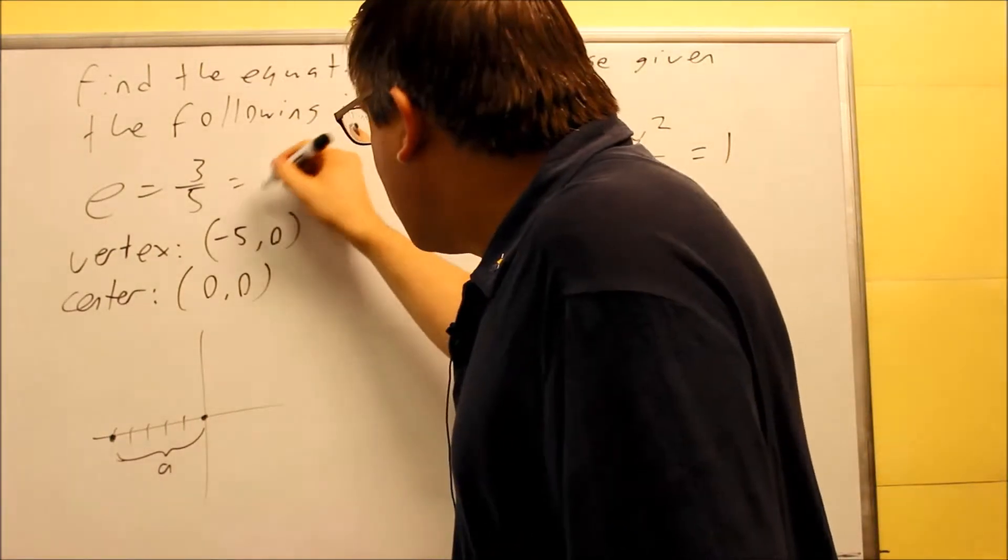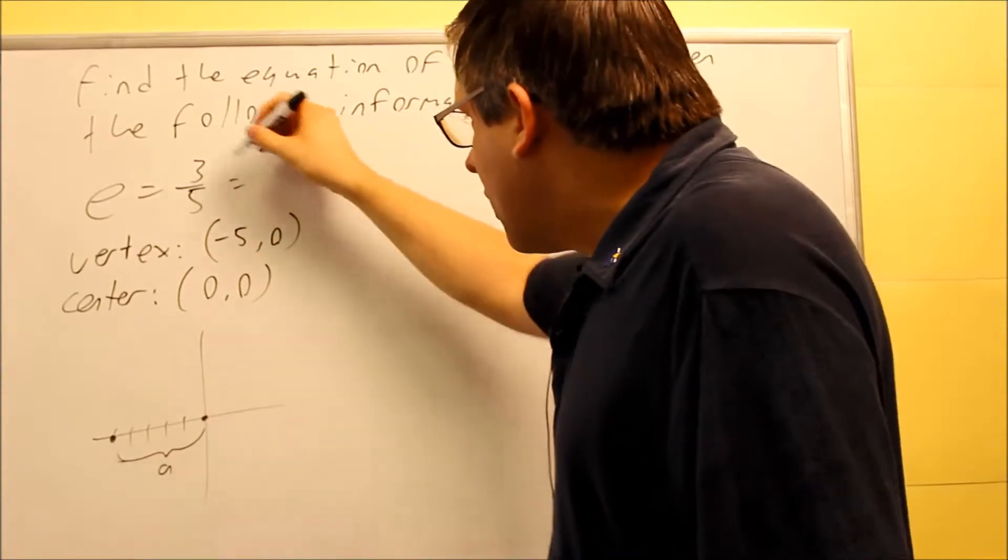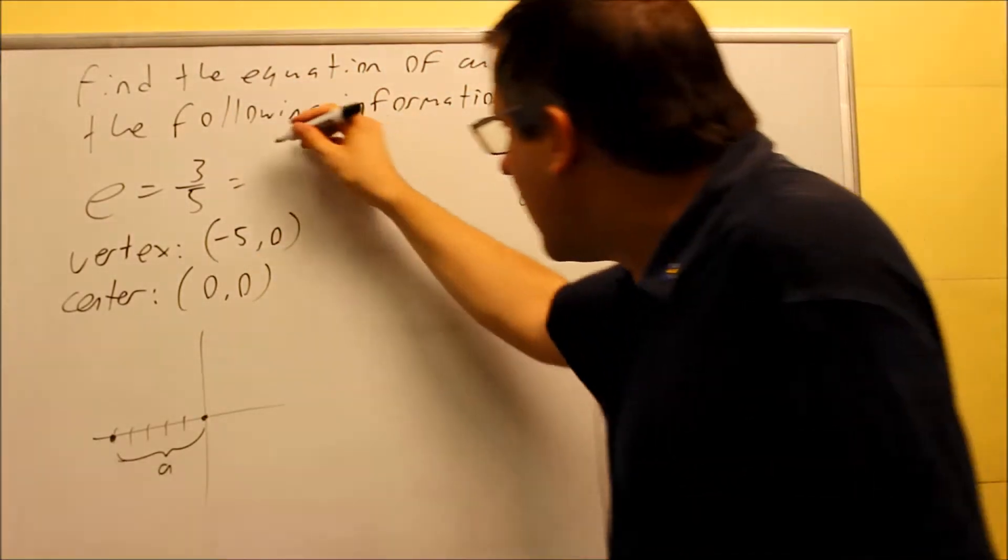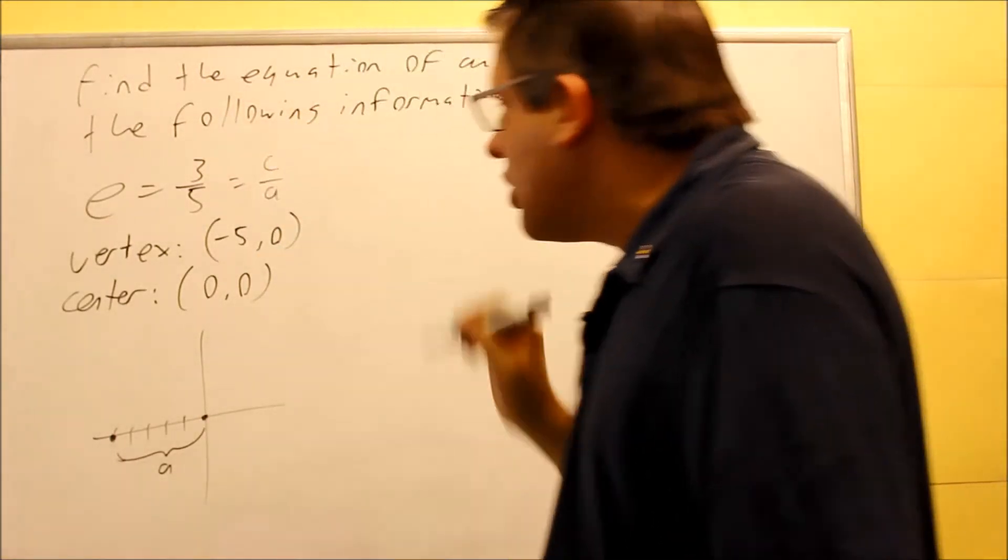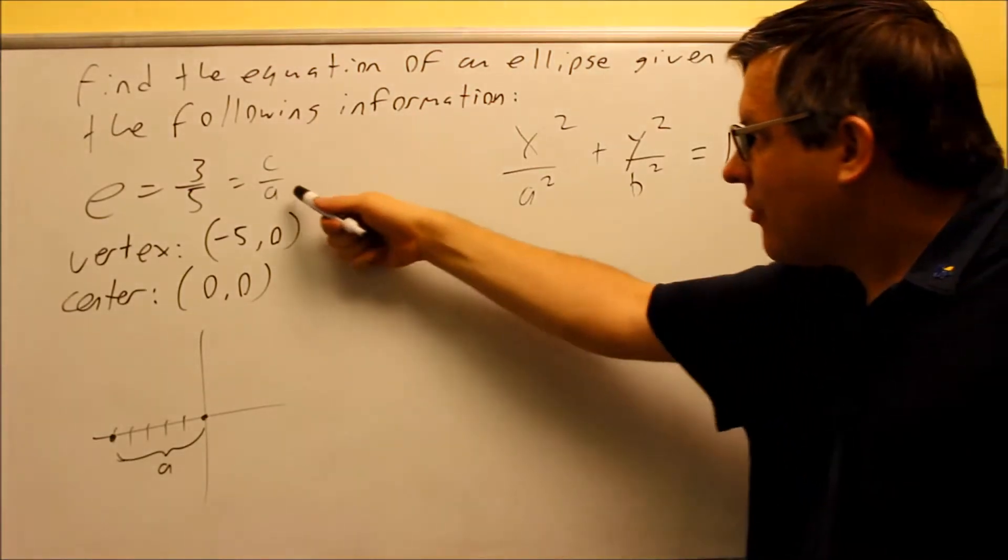Now, I also know that I also get the same result because my eccentricity is 3 over 5, so that formula is c over a, so I could have gotten a from this also,